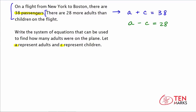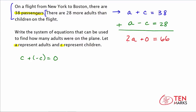The elimination method is better here because when you add the two equations, the C variables cancel out to zero since C plus negative C equals zero. So let's add the two equations: A plus A equals 2A, C plus negative C equals zero, and 38 plus 28 equals 66. This simplifies to 2A equals 66. Dividing both sides by 2 gives A equals 33, so there are 33 adult passengers on the flight.